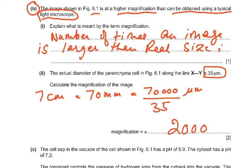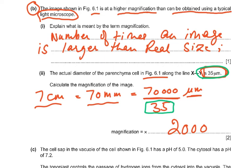The actual diameter of the parenchyma cell is 35 micrometers. We measure the image and get 7 centimeters, which equals 70 millimeters, which equals 70,000 micrometers. Dividing 70,000 by 35 gives a magnification of 2000.